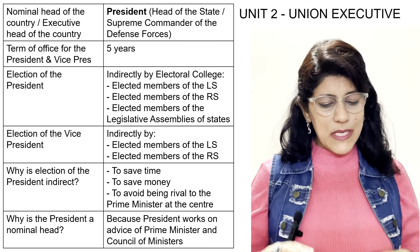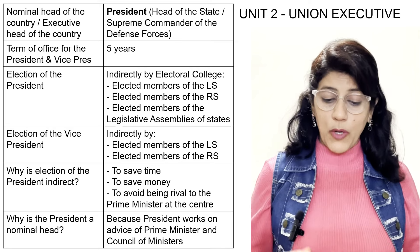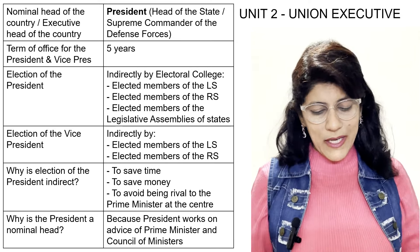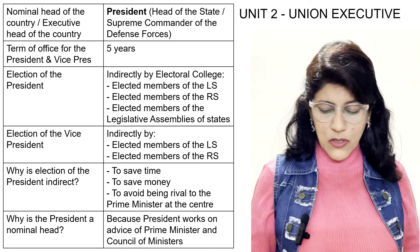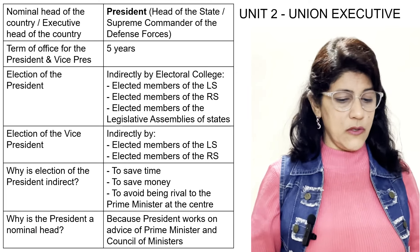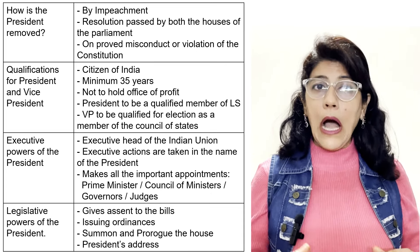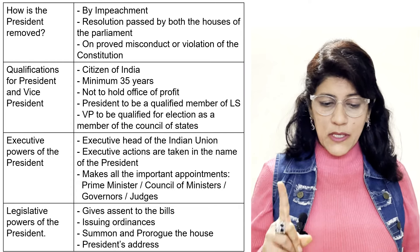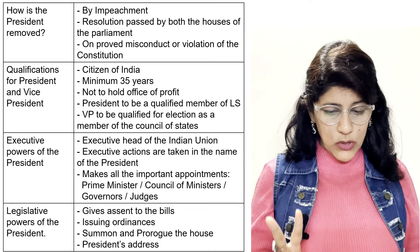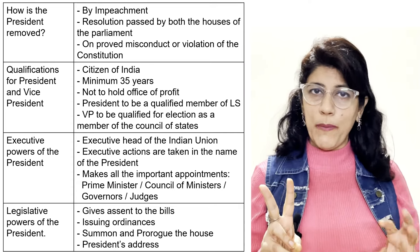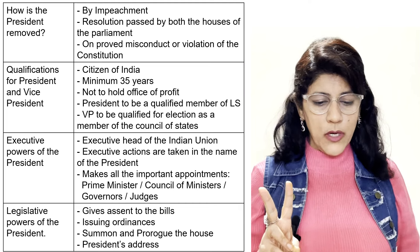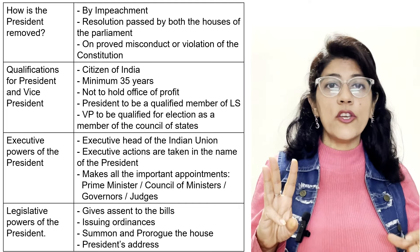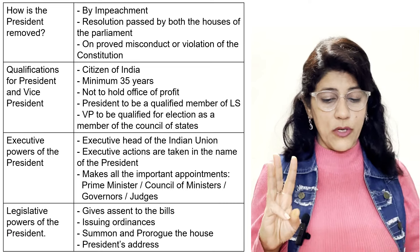Why is the President a nominal head? Because the President always works on the advice of the Prime Minister and Council of Ministers. How is the President removed? By impeachment — resolution passed by both houses of Parliament by a two-thirds majority, on grounds of proved misconduct or violation of the Constitution.